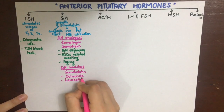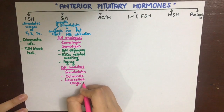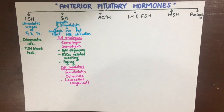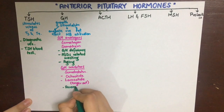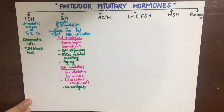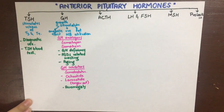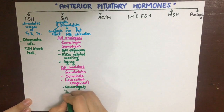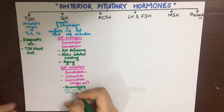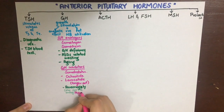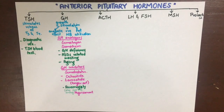The drugs which can be used to inhibit growth hormone are octreotide and lanreotide. Lanreotide is basically longer acting. They can be used in the treatment of acromegaly, and when they don't work we can give growth hormone receptor antagonists such as pegvisomant subcutaneously.